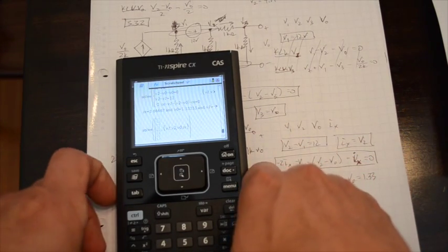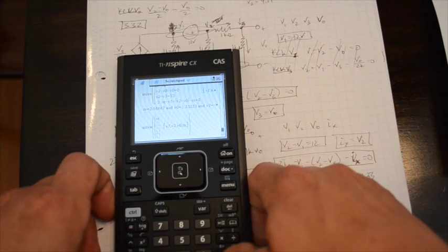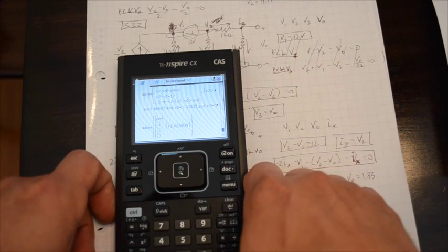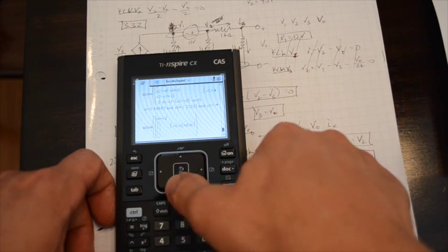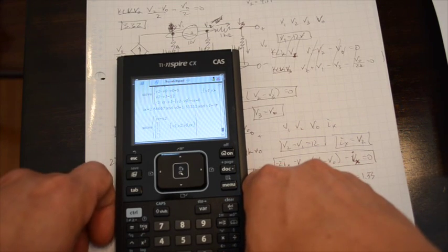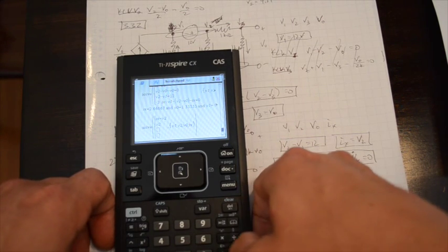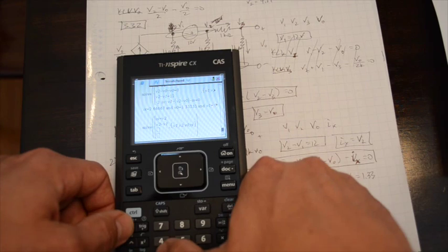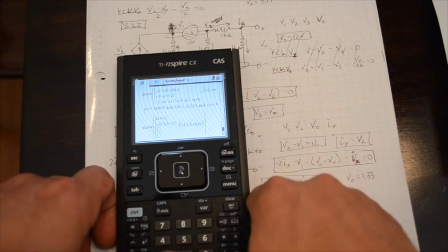Pretty simple. So we've got IX equal to V2. Go down. V2 minus V1 equals 12. Come down again.